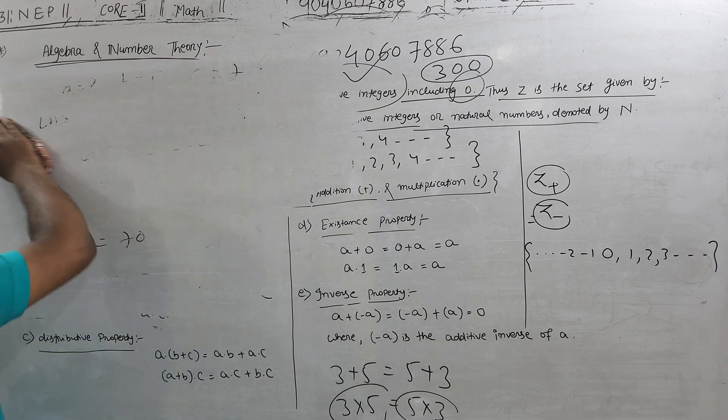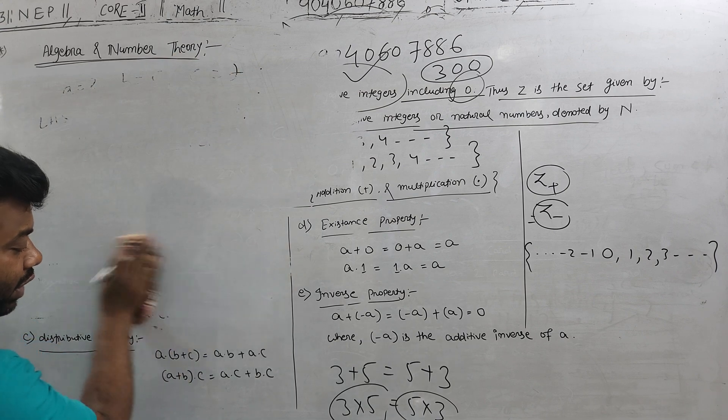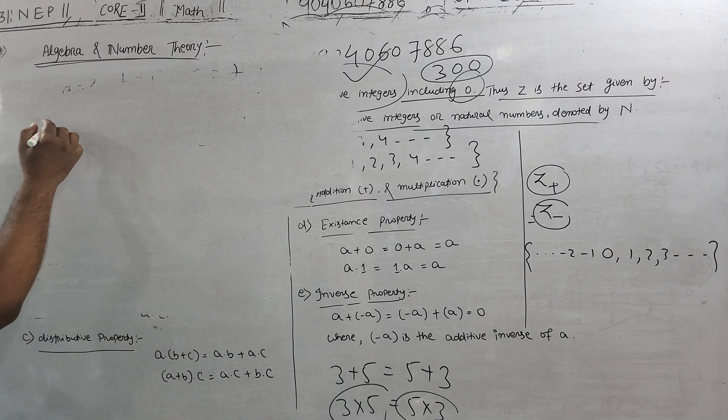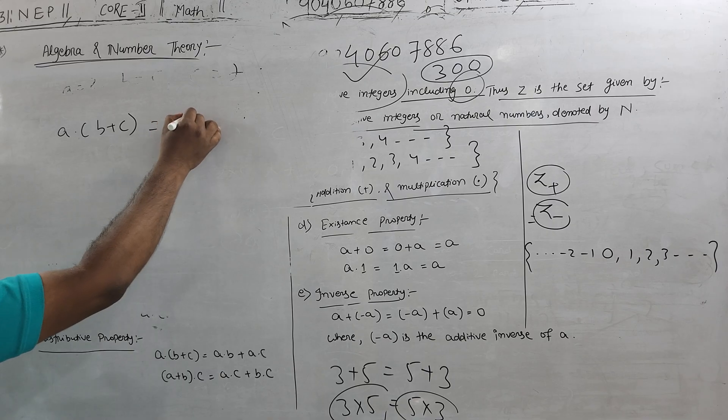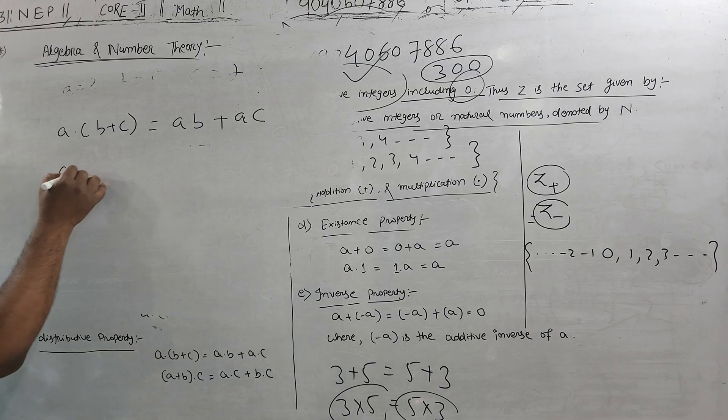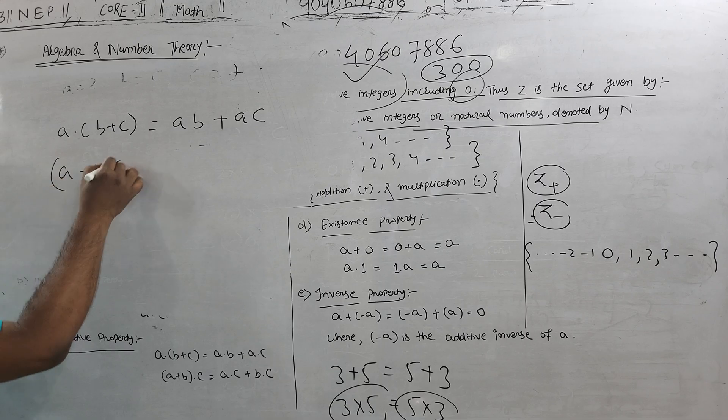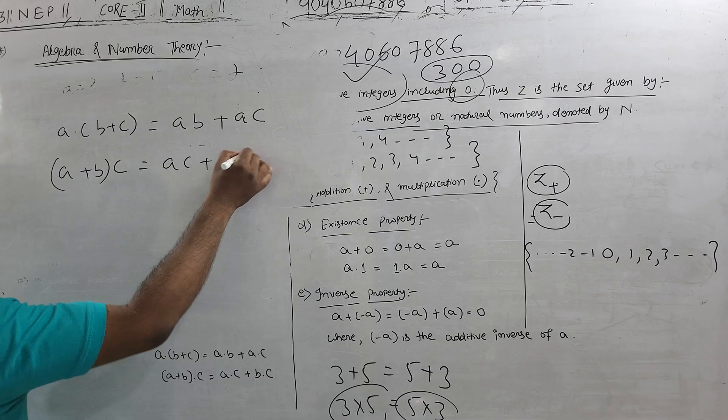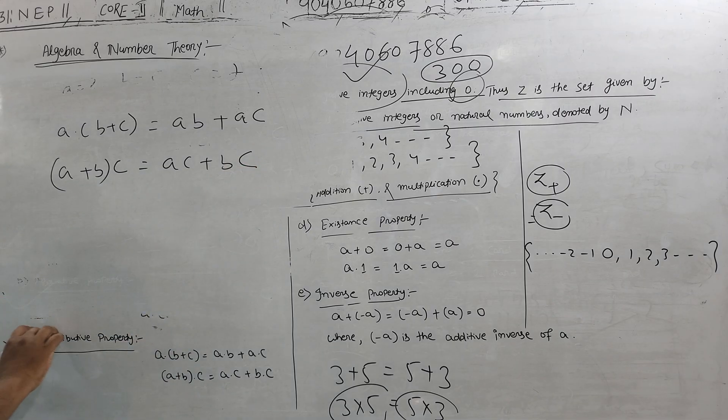The most satisfying is distributive property. For distributive property: a times b plus c equals a into b plus a into c. Same: a plus b into c equals a c plus b c. This is your distributive property.